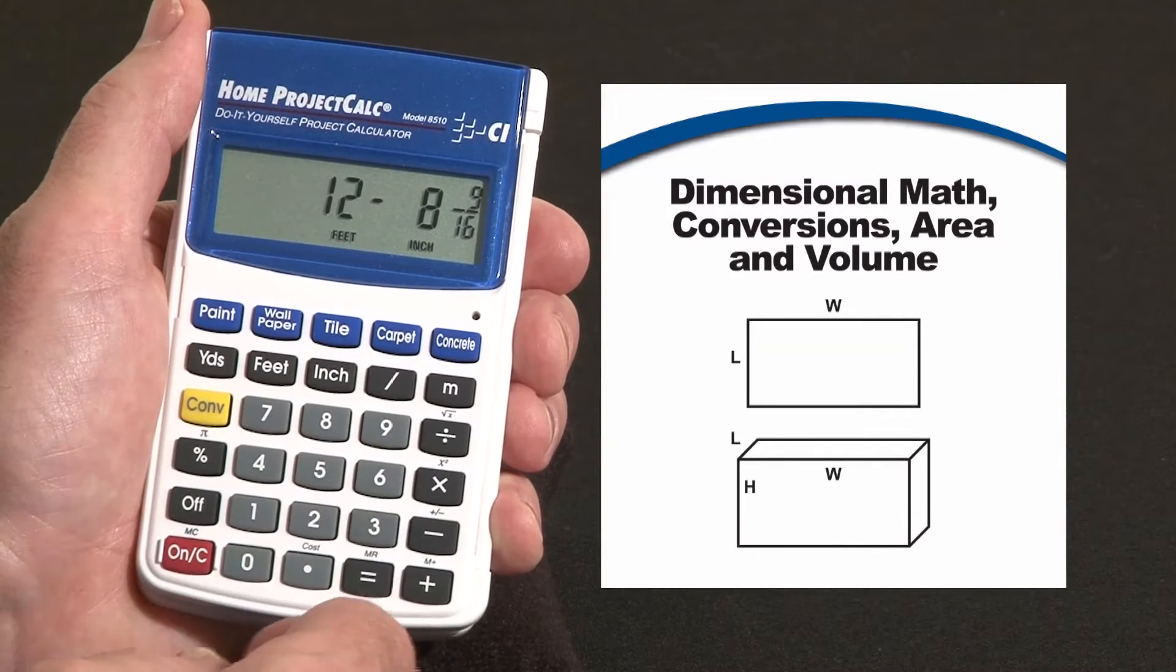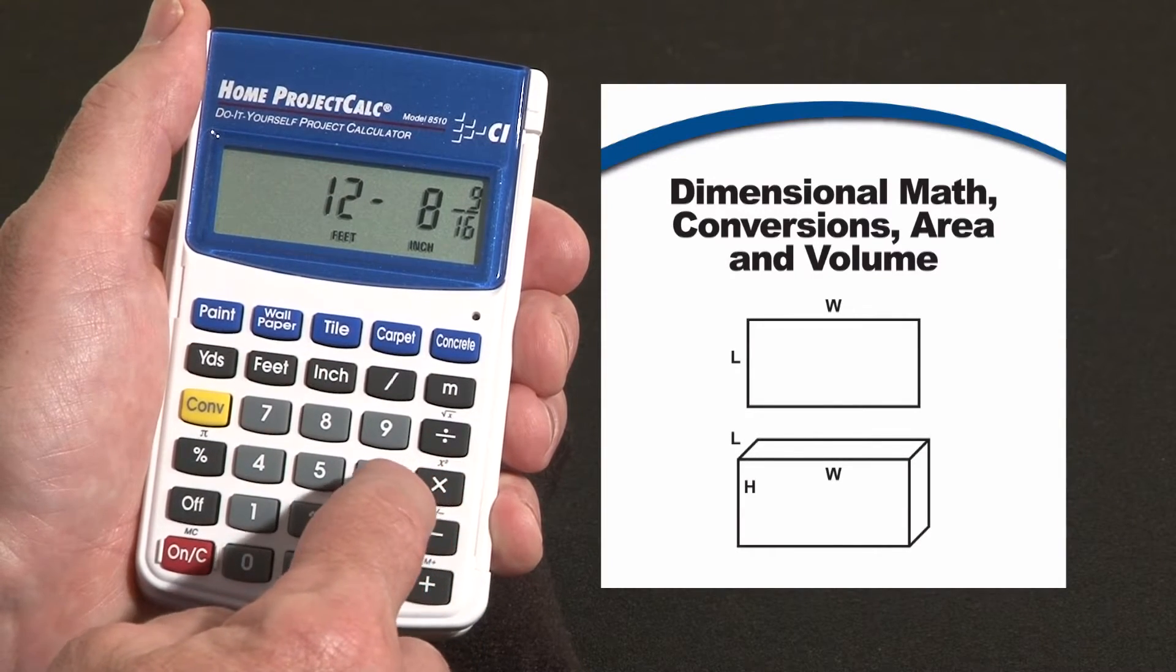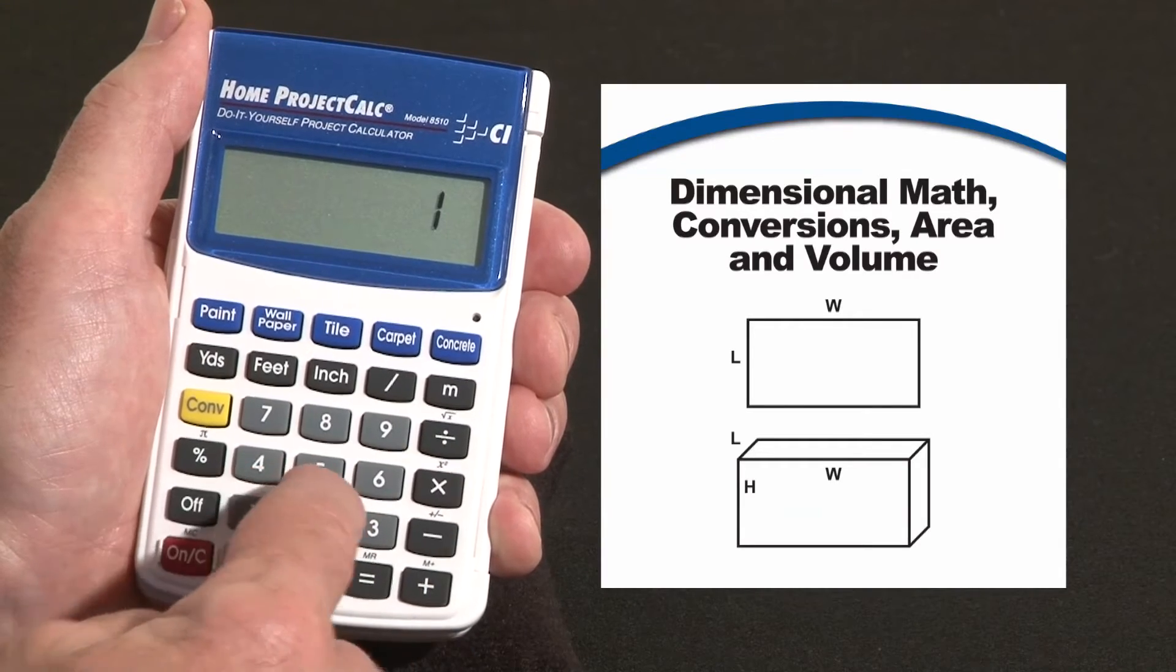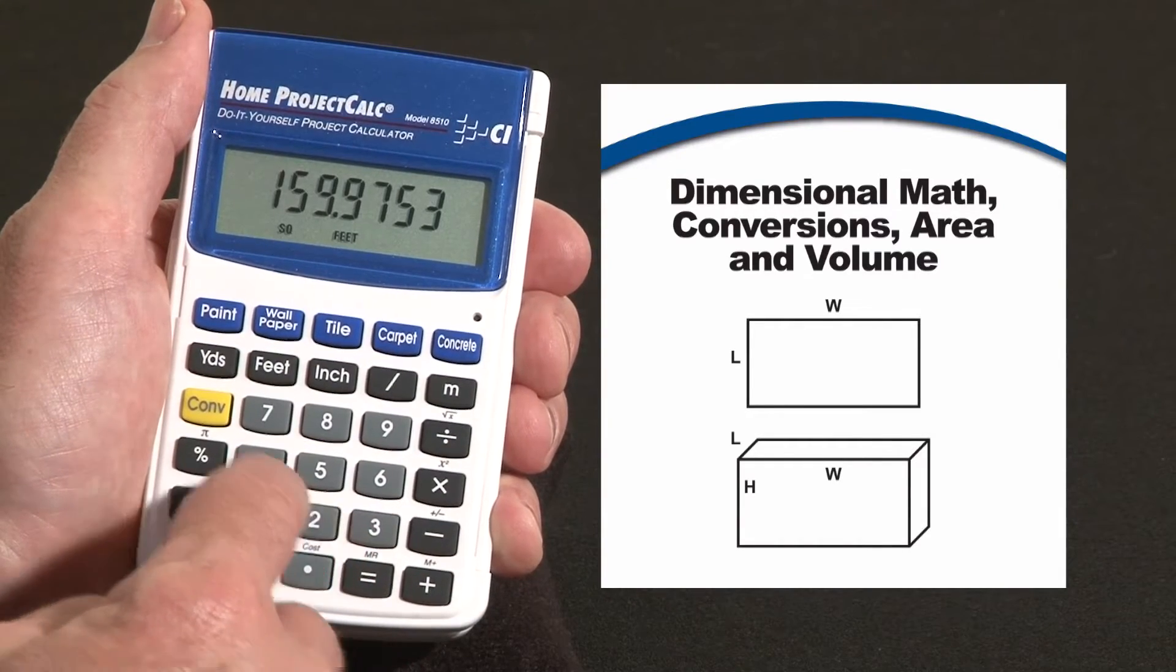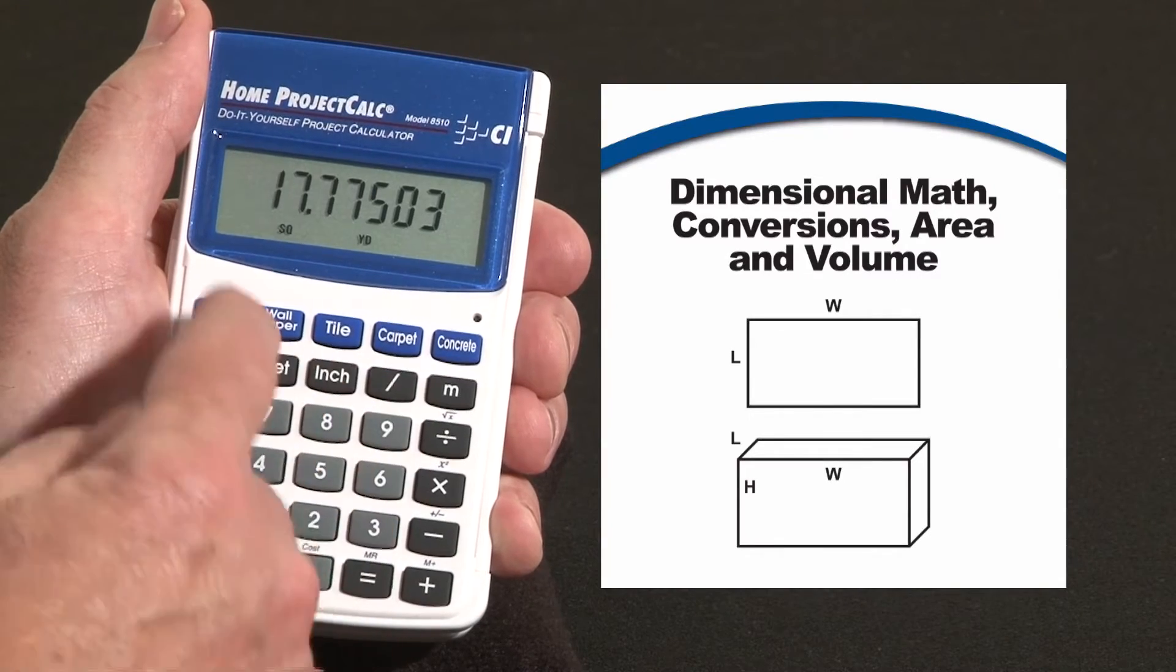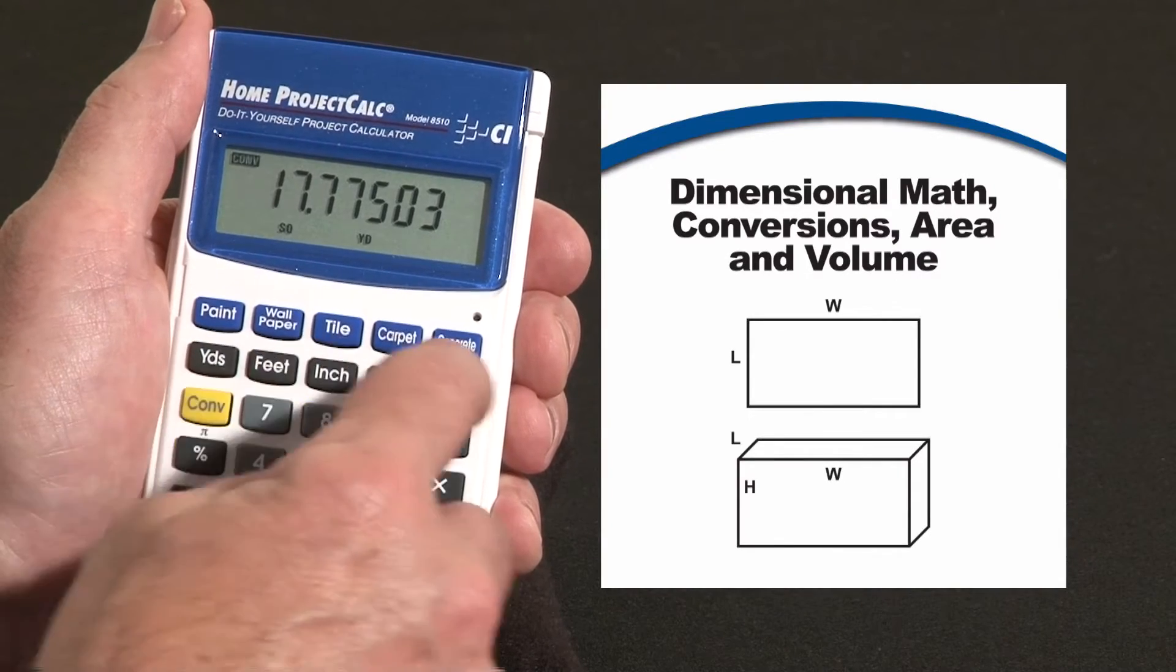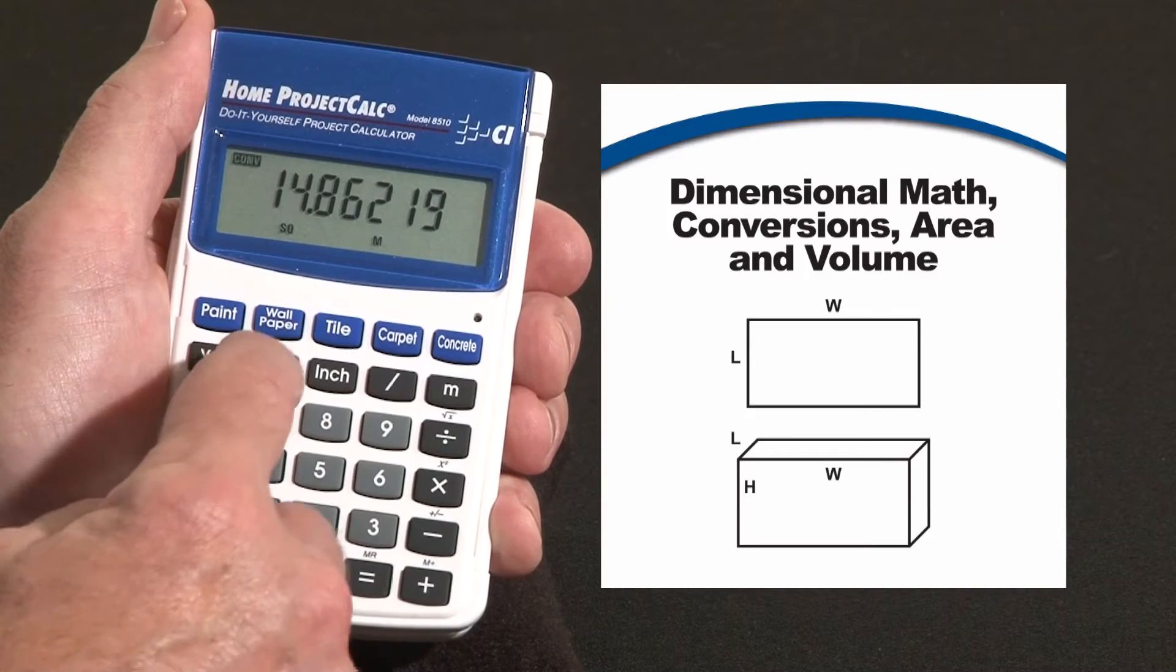Or we can multiply this times another side. Say this is a patio you're going to pour. Times twelve feet, seven inches, equals some square footage. You can also have it be square yards if it was flooring that you were calculating. Or square meters, maybe. Or go back to square feet.